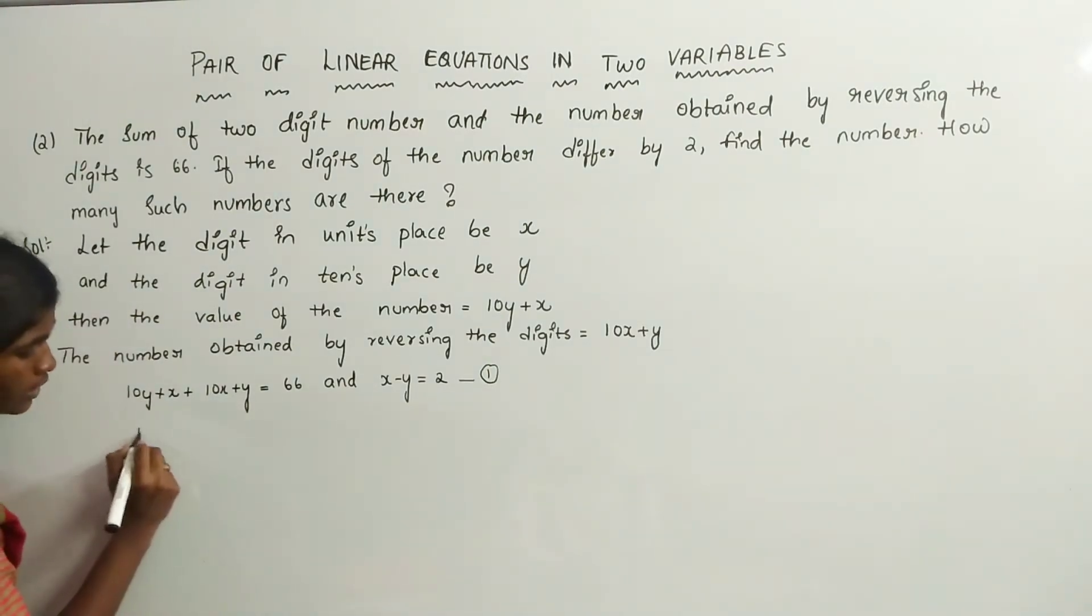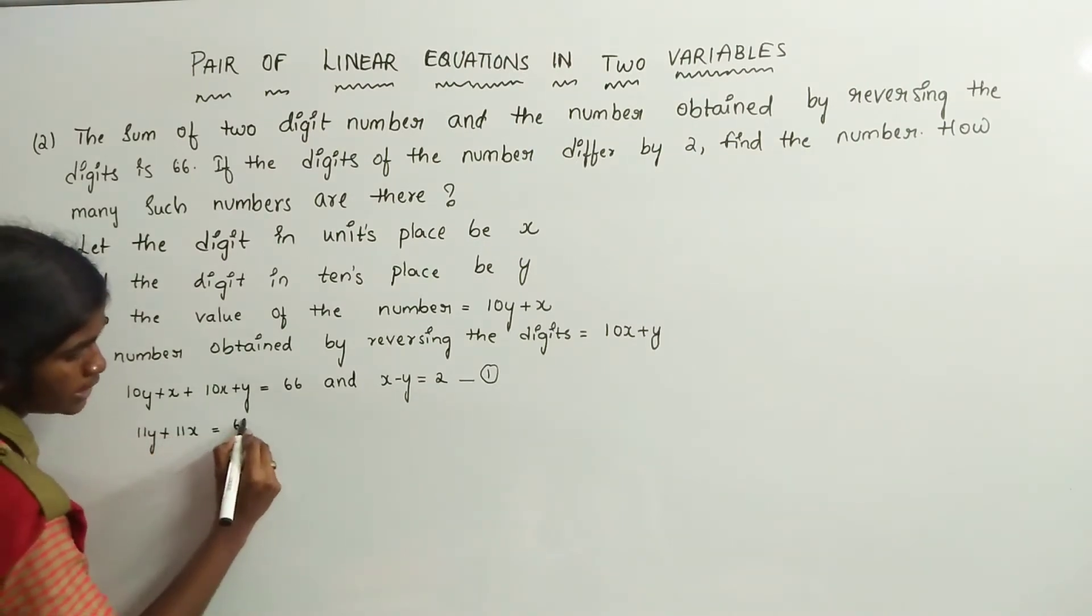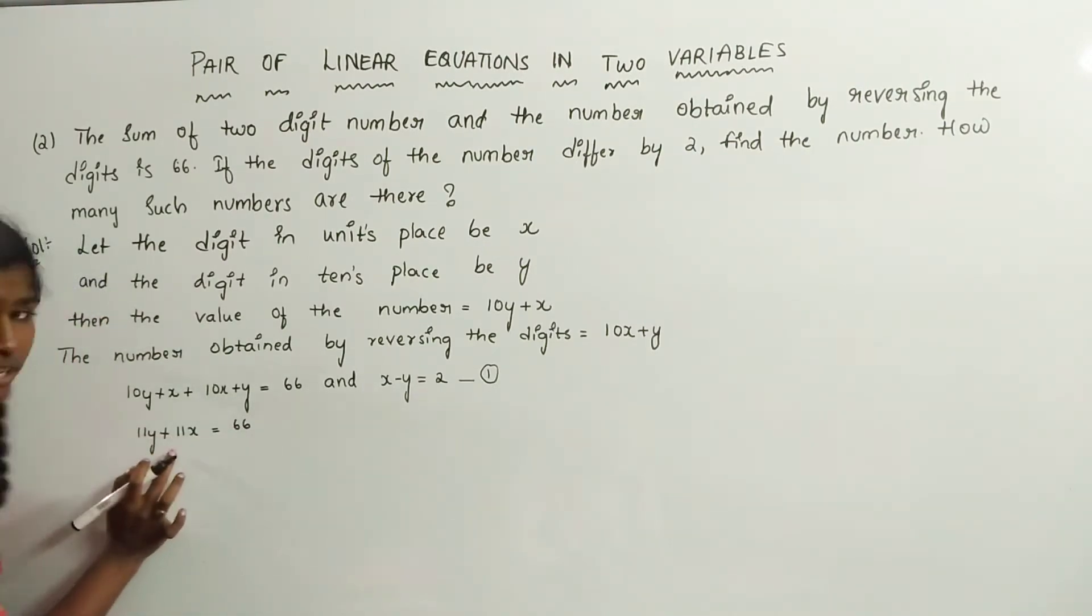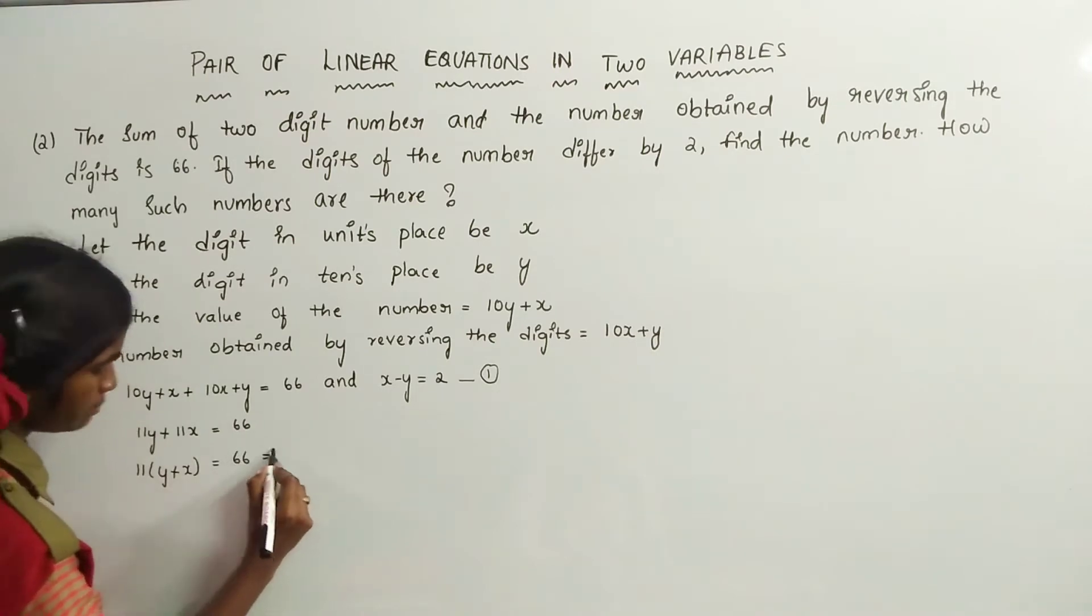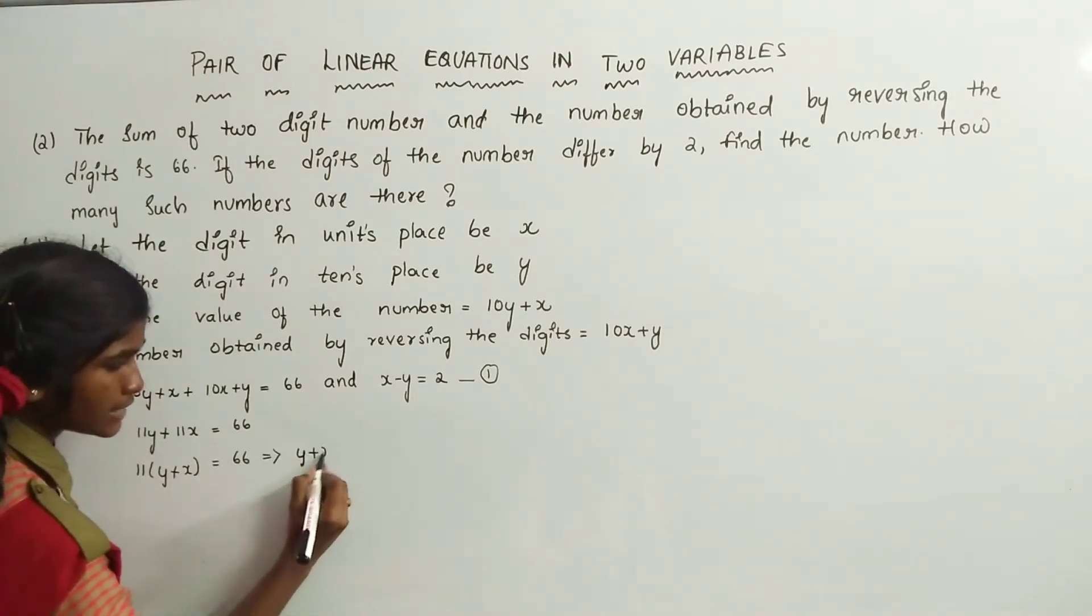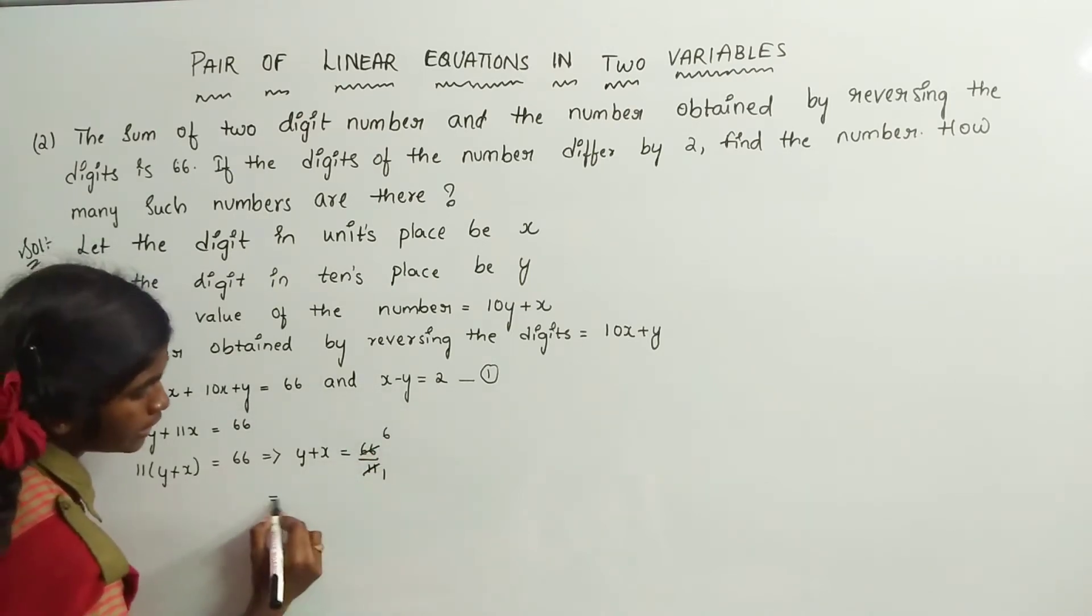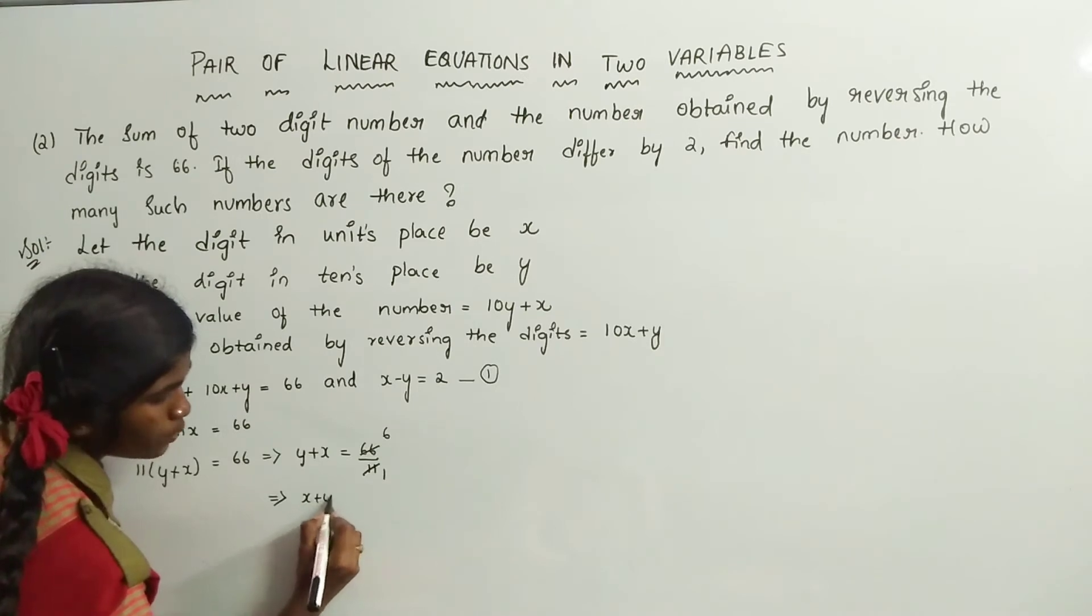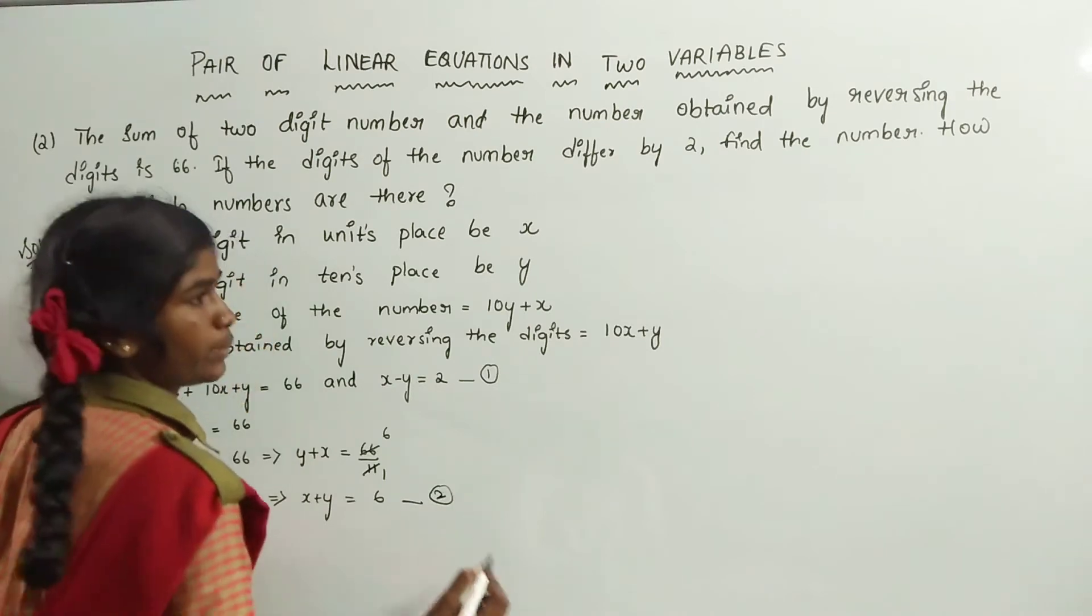10y plus y is 11y, and x plus 10x is 11x, so 11y plus 11x equals 66. Taking 11 common: 11 times (y plus x) equals 66. That implies y plus x equals 66 divided by 11, which equals 6. This is the second equation.